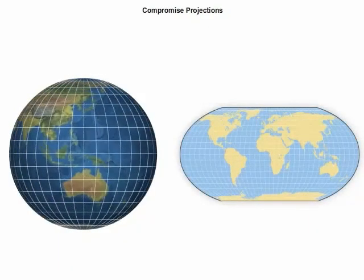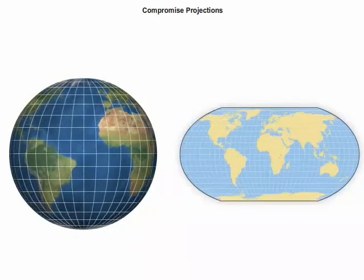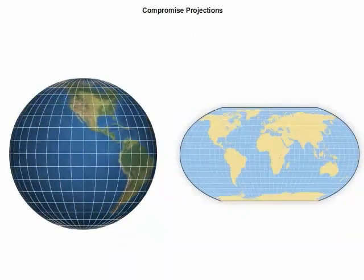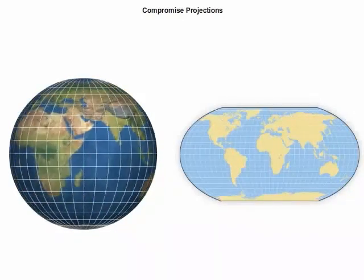Compromise projections do not preserve any single property. Instead, these projections attempt to preserve the size and visual appearance of landmasses on the Earth's surface, while balancing the distortions of size and shape.